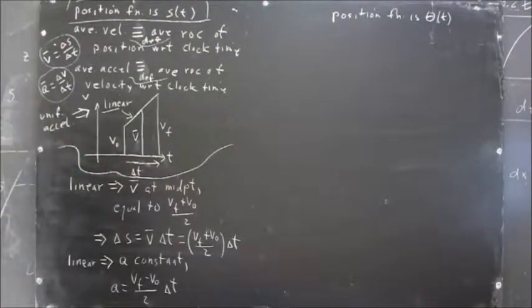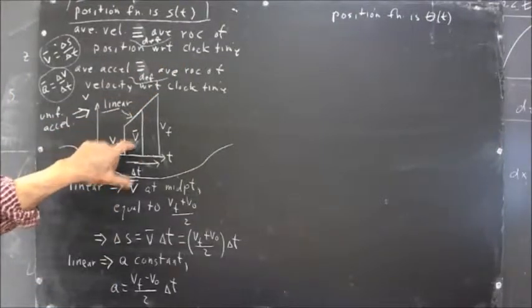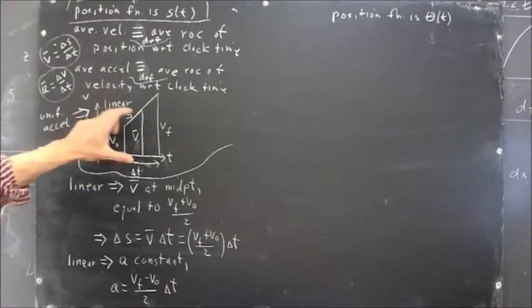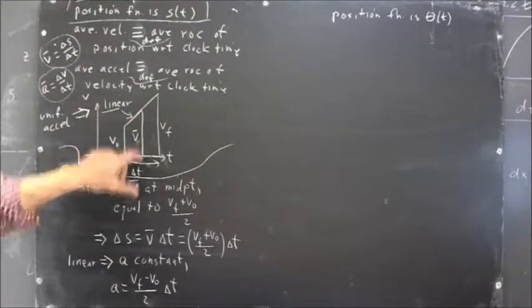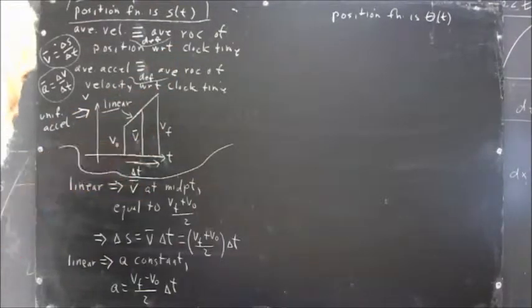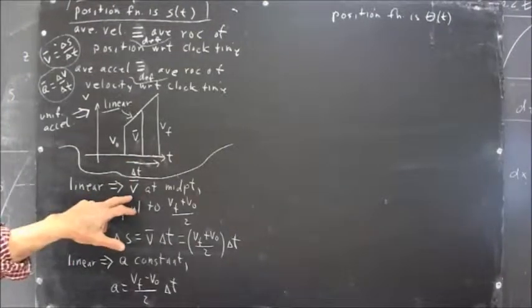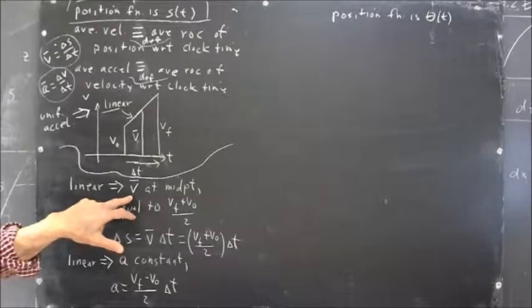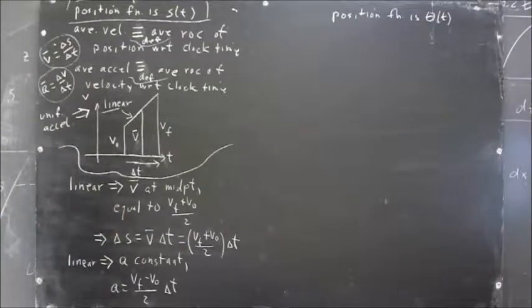And we're assured that if the acceleration is uniform, this graph is linear, so that we have an average velocity, which is going to turn out to occur right in the middle of the time interval and to be the graph altitude of the trapezoid at its midpoint. So we have the conclusion. If the graph is linear, then the average velocity occurs at the midpoint. If it's not linear, that's not the case, that's not likely to be the case. It doesn't have to be the case, and it usually isn't.